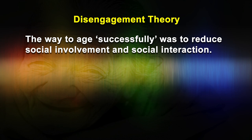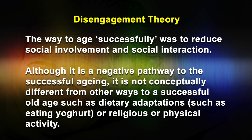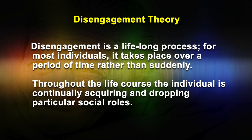Disengagement theory had a profound influence upon the development of gerontological research, partly because it was the first major theory and thereby generated considerable debate and discussion within the gerontological world. It has also been influential because it appeared to indicate the pathway to successful aging. In this case, the way to age successfully was reduced social involvement and social interaction, although it is a negative pathway. It is not conceptually different from other ways to a successful old age, such as dietary adaptations like eating yogurt, or religious or physical activity.